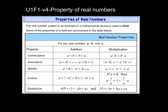The commutative property, as we should remember, is where the order doesn't matter. Like A plus B, you could rearrange that to make it B plus A — the sum is the same. Same thing for multiplication: the order doesn't matter.